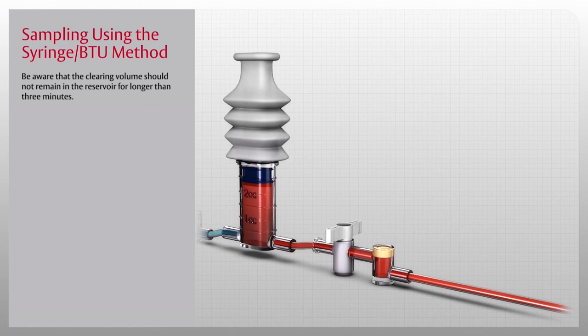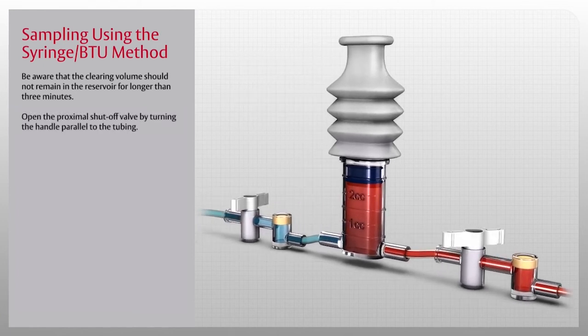To re-infuse the clearing volume, first open the proximal shutoff valve by turning the handle parallel to the tubing.